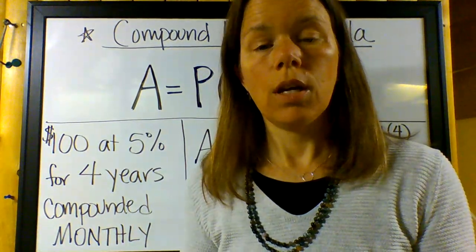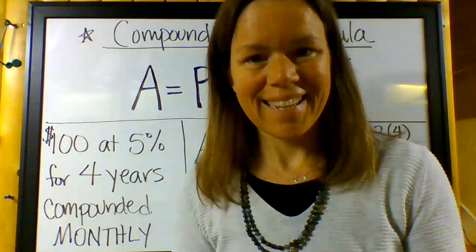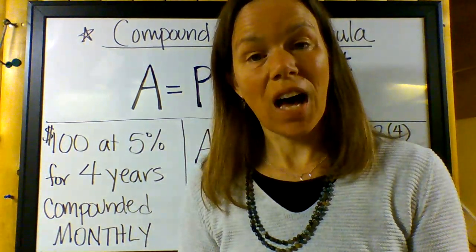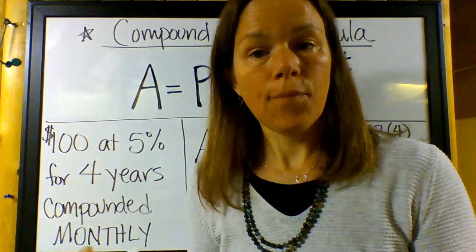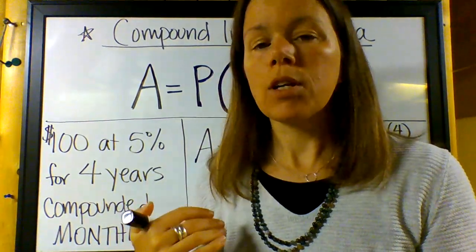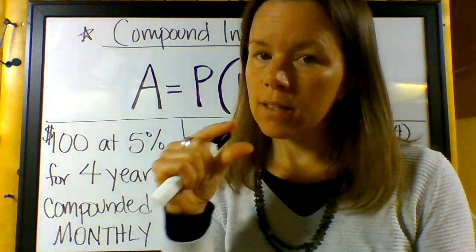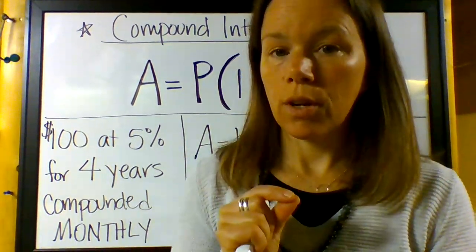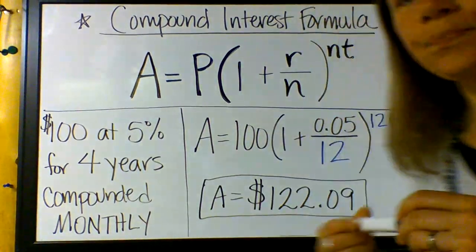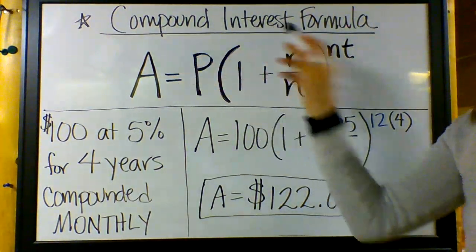If it's compounded daily, that's 365 times per year. So we're going to take the same formula we used yesterday and we're going to take a look at where we put this idea of compounding more often than once per year. Let's take a look at the board.